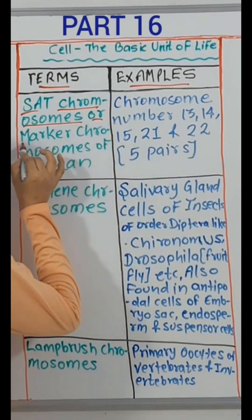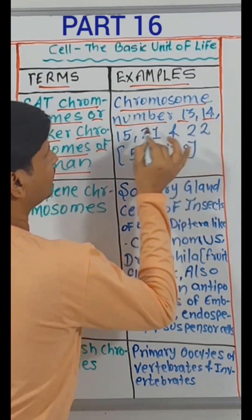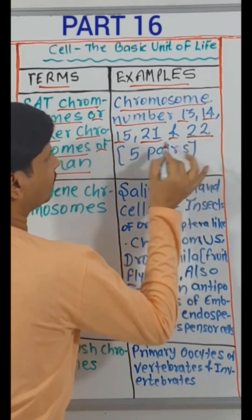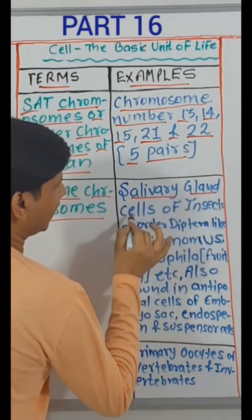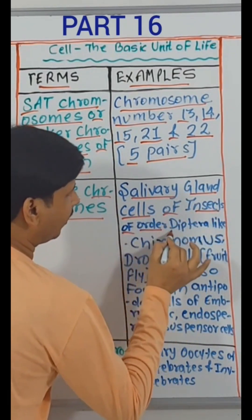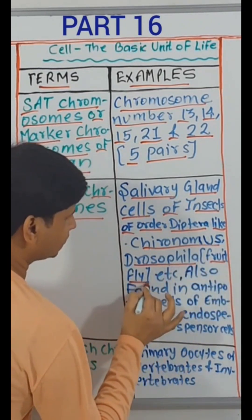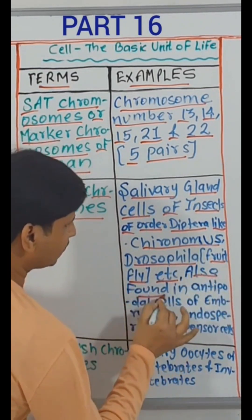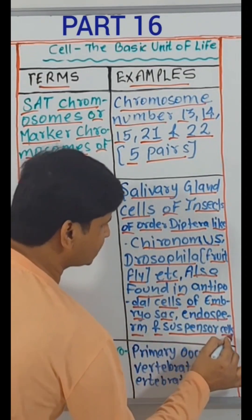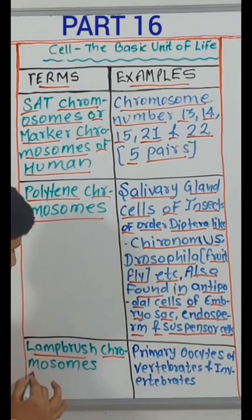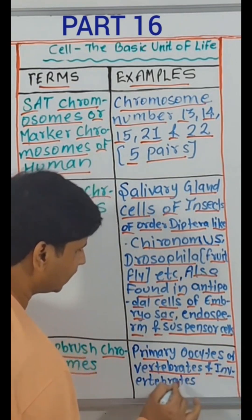SAT chromosomes or marker chromosomes of human — chromosome numbers 13, 14, 15, 21 and 22, that is 5 pairs. Polytene chromosomes — salivary gland cells of insects of order Diptera like Chironomus, Drosophila (that is fruit fly), etc.; also found in antipodal cells of embryo sac, endosperm and suspensor cells. Lampbrush chromosomes — primary oocytes of vertebrates and invertebrates.